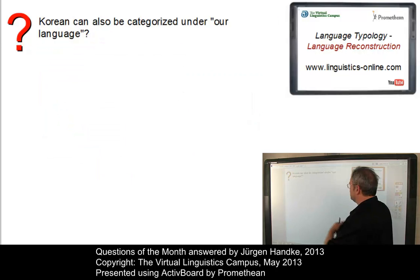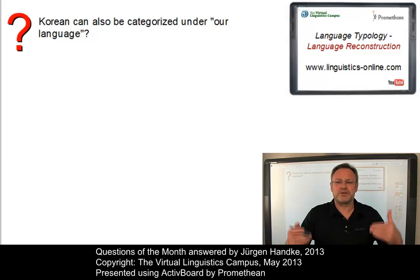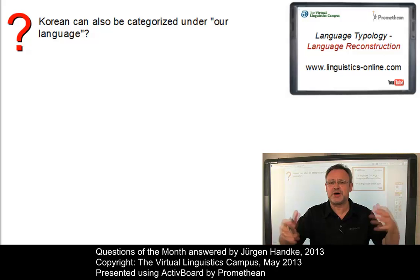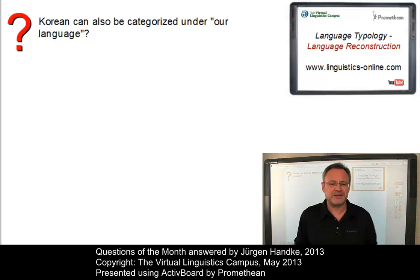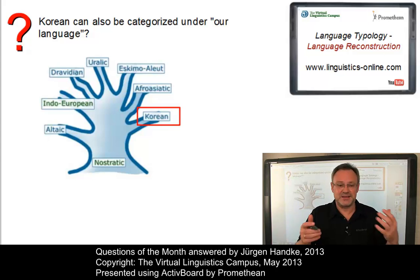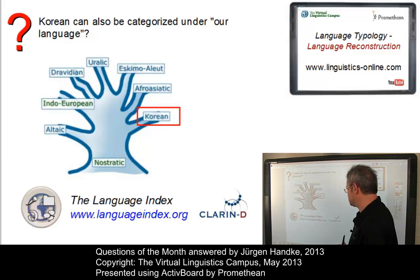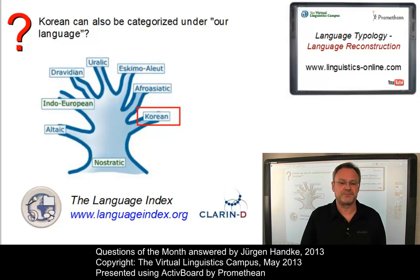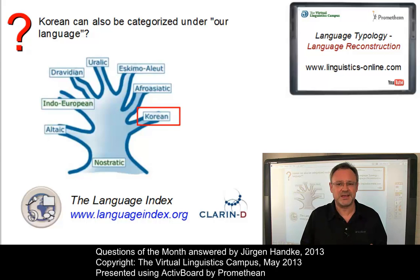Another question relates to language reconstruction. Is Korean not also a language that can be listed under the heading of Nostratic? Well, you are absolutely right. In our virtual sessions, we presented a tree diagram to indicate that Korean is an independent language, and we do the same in the language index that we developed within the Clarindee research infrastructure. In the video, however, we only listed language families and not individual languages. But you are certainly right — Korean is often mentioned under the heading of Nostratic.